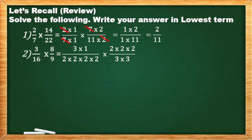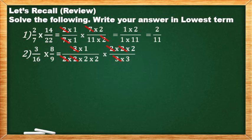Now, magka-cancel na tayo ngayon — magkakaparehas sa numerators at saka sa denominators. Merong isang 3, magka-cancel ko din yung 3. May nag-itang isang 2, na-cancel ko. And last, meron ulit akong nakitang magkapares na 2 sa numerator at denominator. Ano ang natira sa numerator? 1. Ano ang natira sa denominator? 2×3. Simplify natin yan. And the final answer is 1/6.